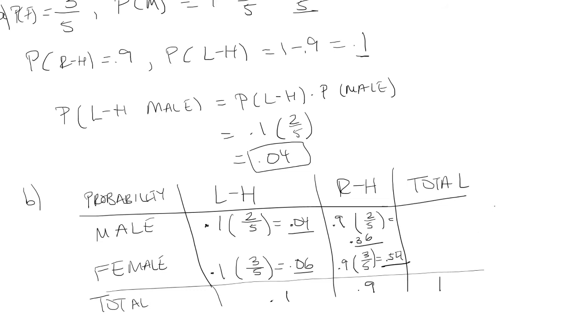And now for the male total, I have to add 0.04 with 0.36 to get 0.4. And then for female total, it's 0.06 plus 0.54 to get 0.6. And so 0.4 plus 0.6 is 1.